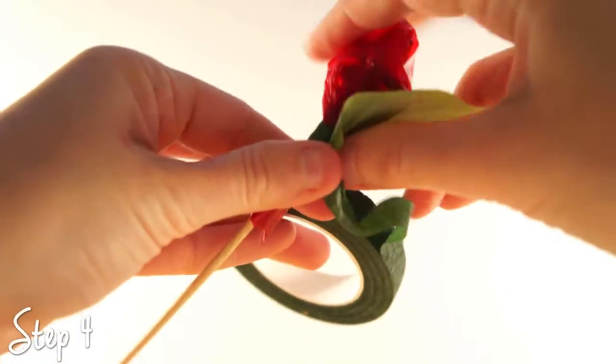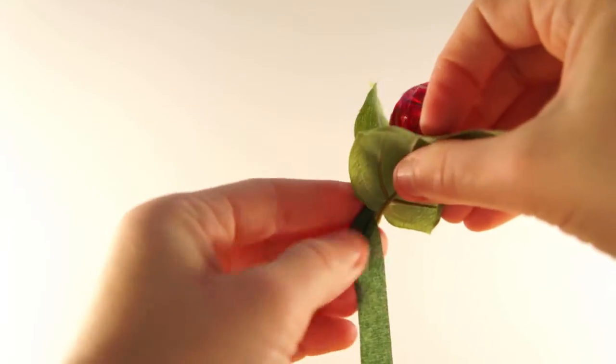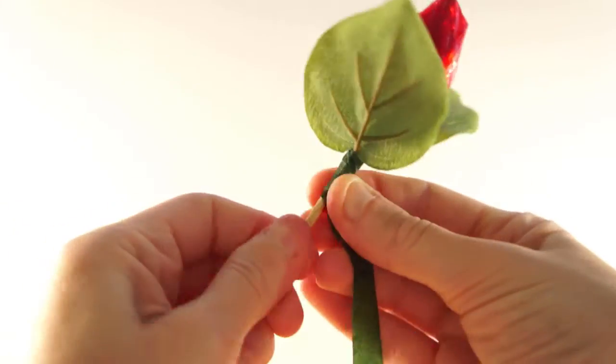Place the stem of the plastic leaf along the skewer and continue wrapping the floral tape around it. Add as many leaves as you like as you continue to cover the remaining skewer with tape.